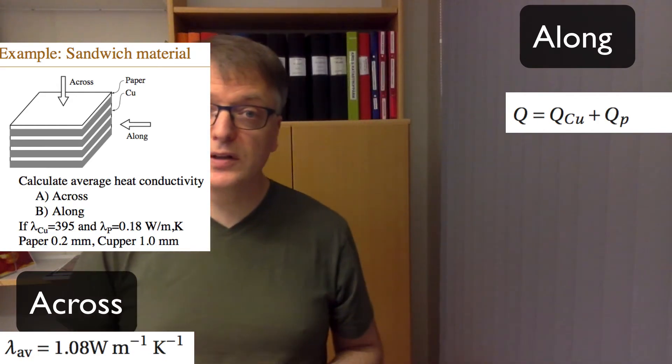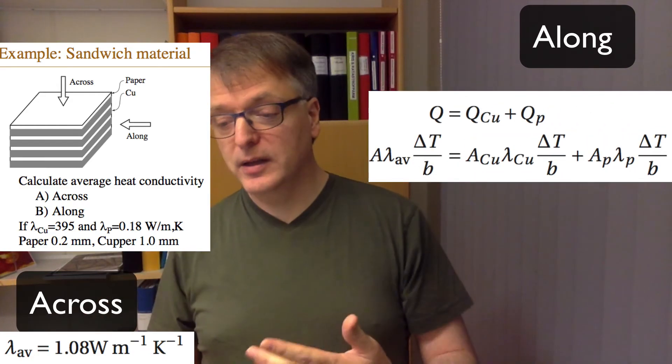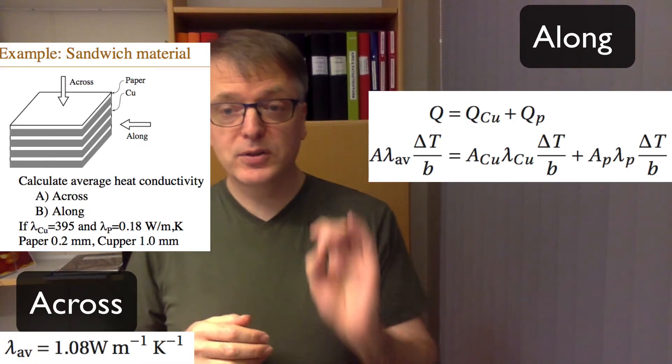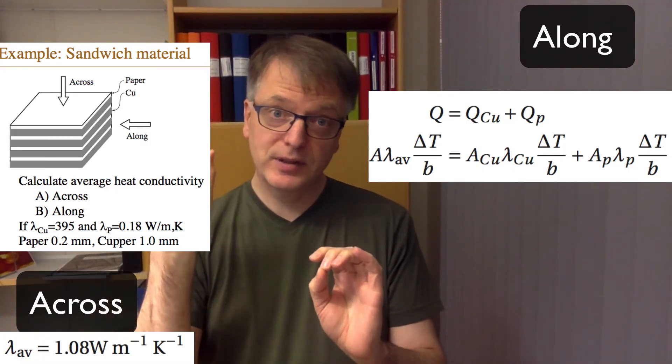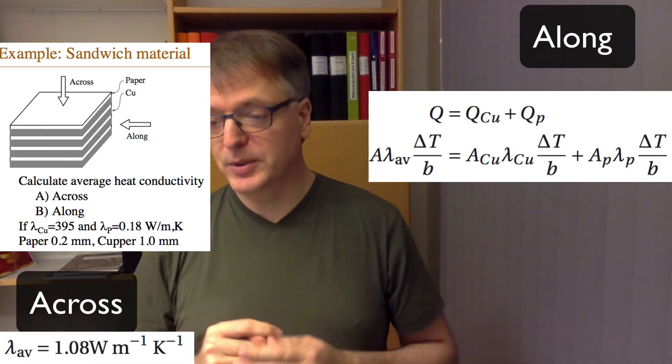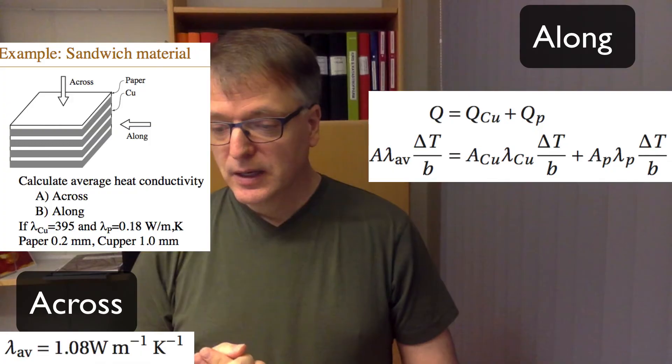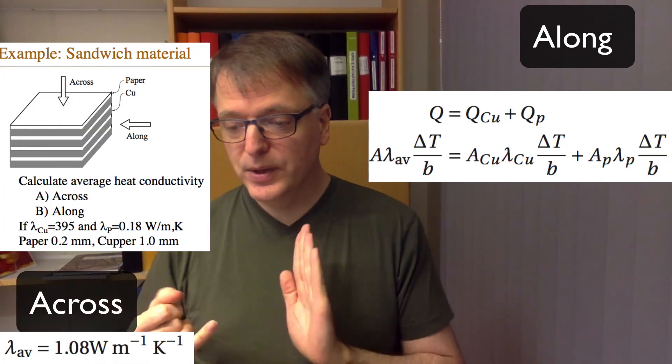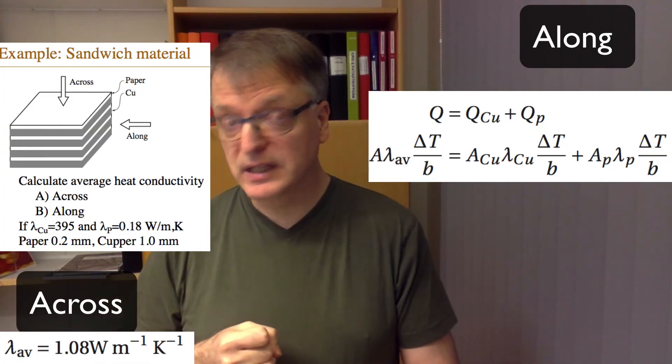Using the equations for conductivity, we can rewrite that as the area times the conductivity times the temperature difference divided by the thickness for the average, for the paper, and for the copper. Now the temperature difference is the same.